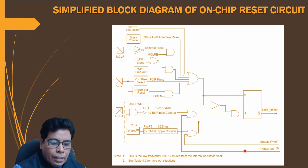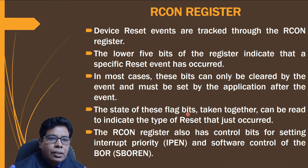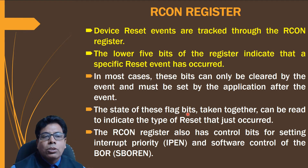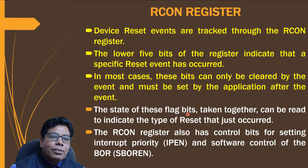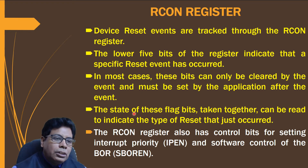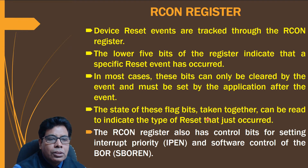The device reset events are tracked through the RCON or reset control register. The lower 5 bits of RCON indicate that a specific reset event has occurred. Each of these bits are flag bits, and in most cases these bits are cleared by the event and must be set by the application after the event, so that for the next reset they will be useful. The state of these flag bits taken together can be read to indicate the type of reset that just occurred.